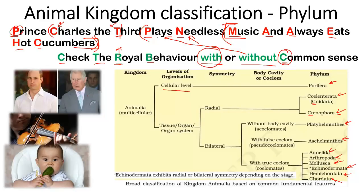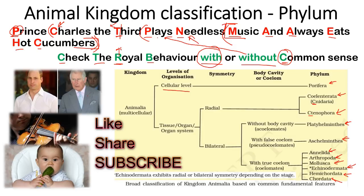This second sentence helps you remember all the properties involved. If you know body symmetry and body cavity, you can answer many questions. To recap: 'Prince Charles the Third plays needless music and always eats hot cucumbers' — and — 'Check the royal behavior with or without common sense.' Together they explain animal kingdom classification till phylum level, including levels of organization, body symmetry, body cavity, and more. If you like this video, please hit the like button, share it, and subscribe. Thank you very much.